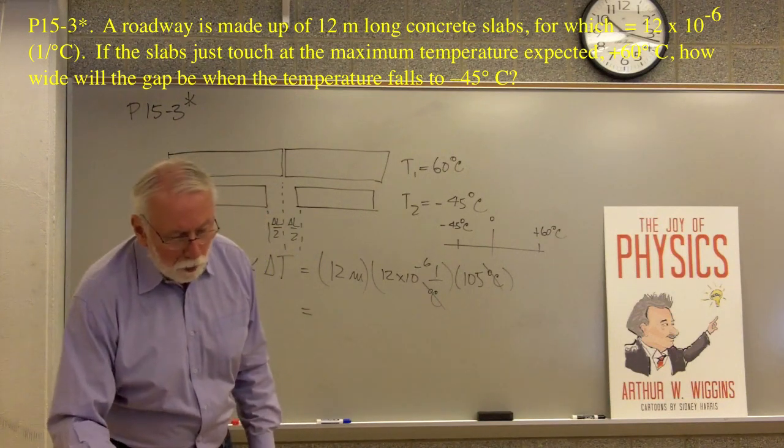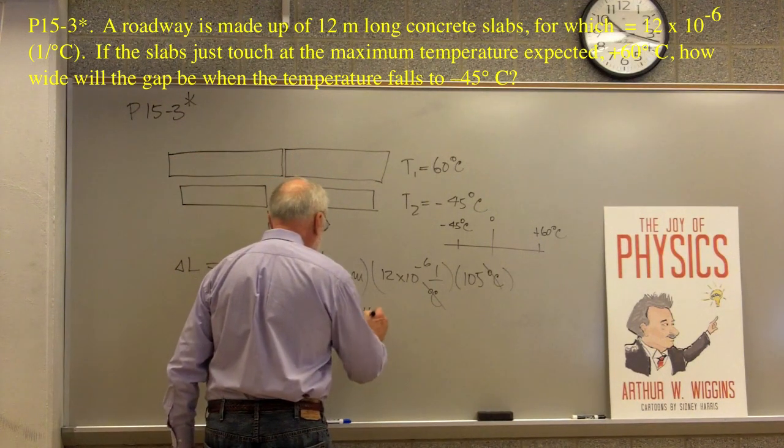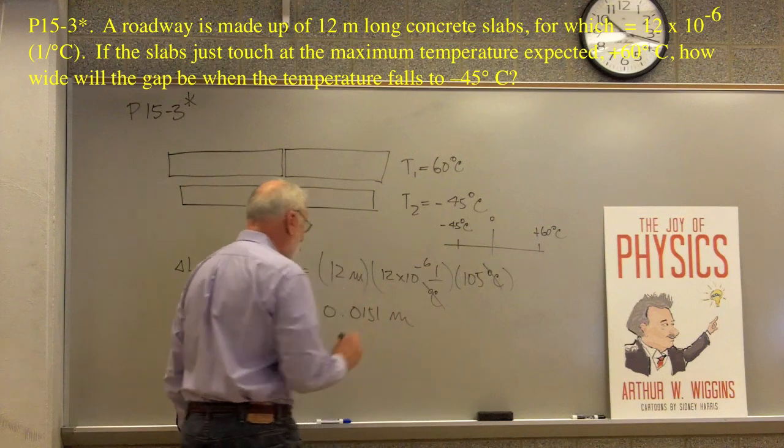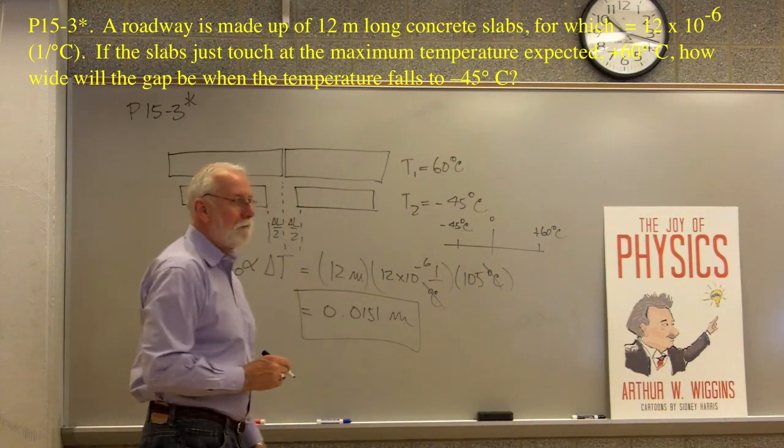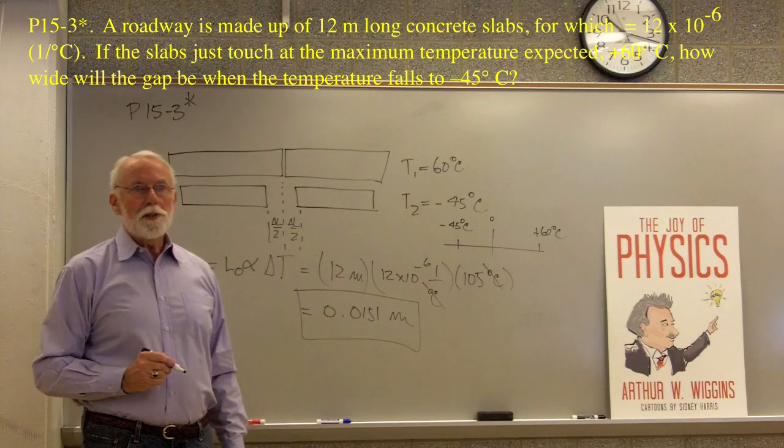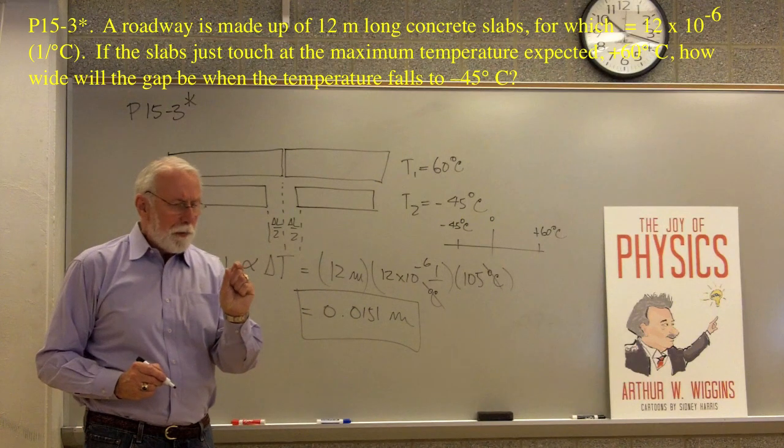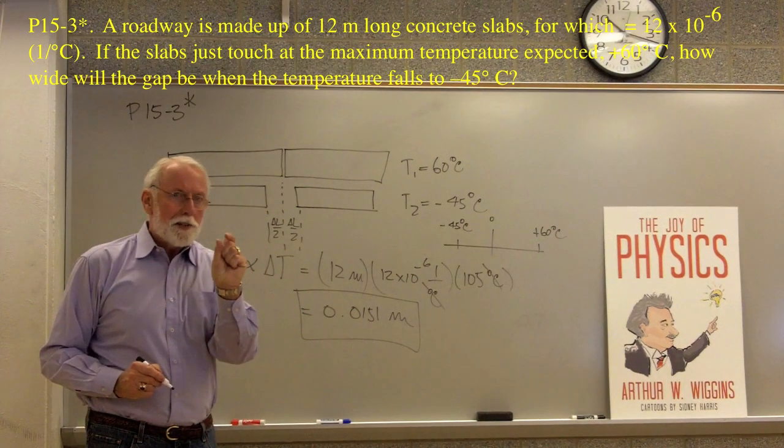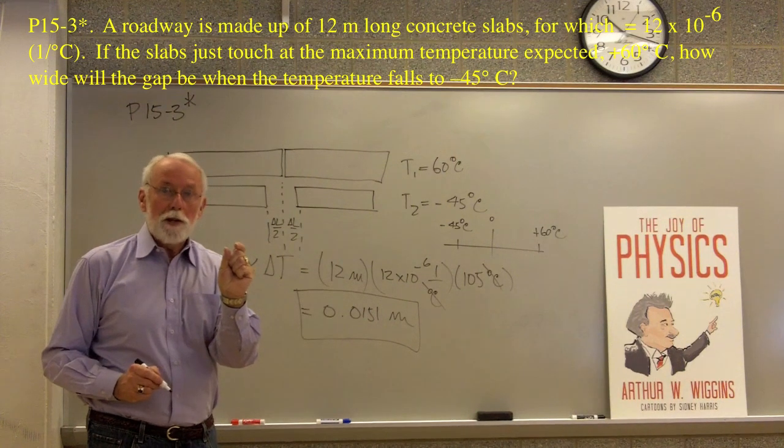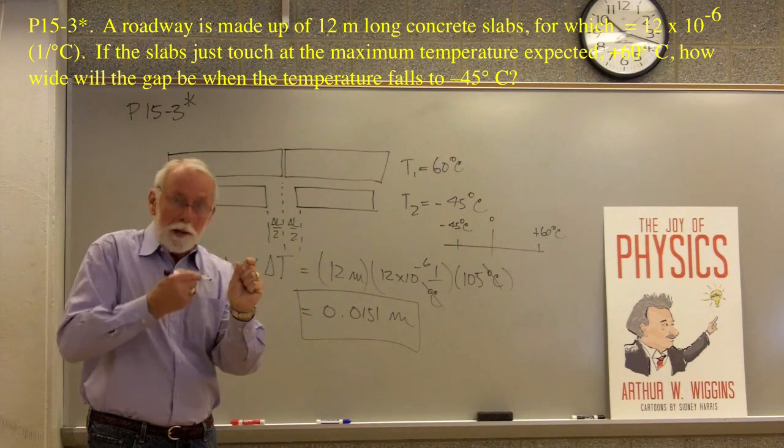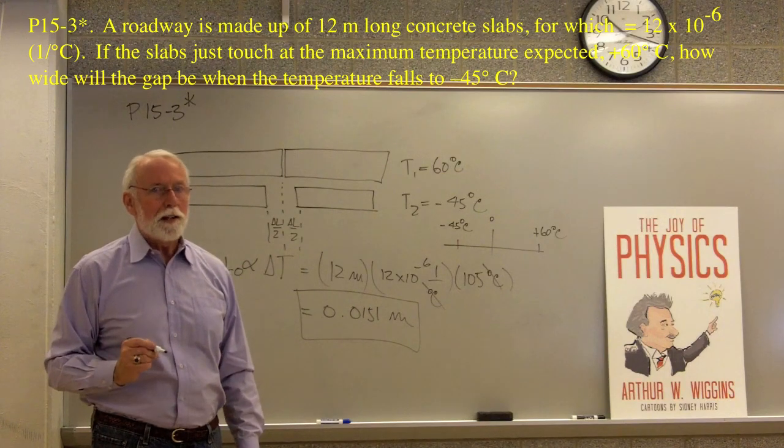And this turns out to be 0.0151 meters. So does that pass the test of reasonability? 0.0151. That's 1.5 centimeters. 1.5 centimeters. It's about like that. Does that seem about right for the kind of gaps that occur in the wintertime when it's really, really cold and you drive over and go bumpity, bumpity, bumpity? Doesn't sound too bad. Let's take that and be happy.